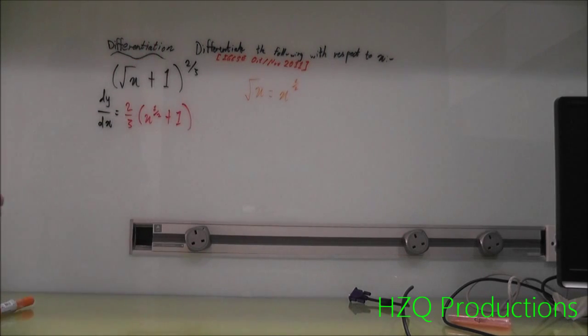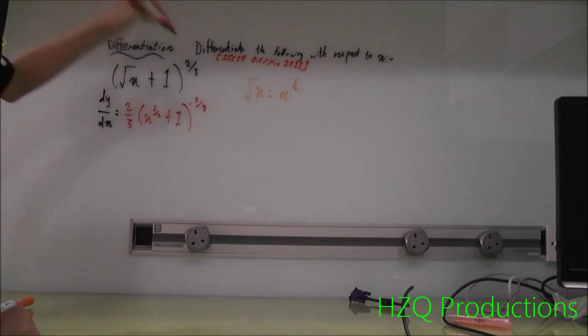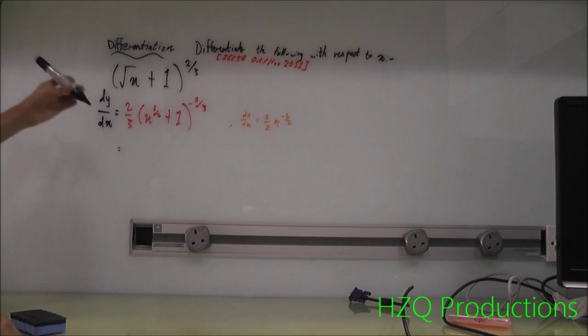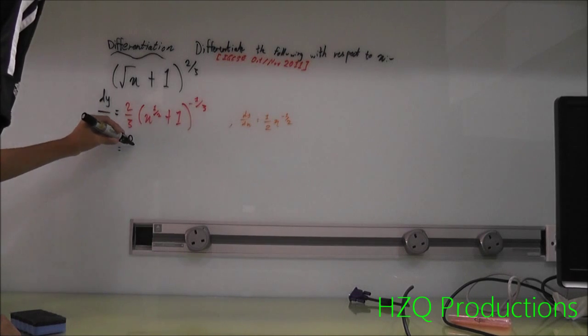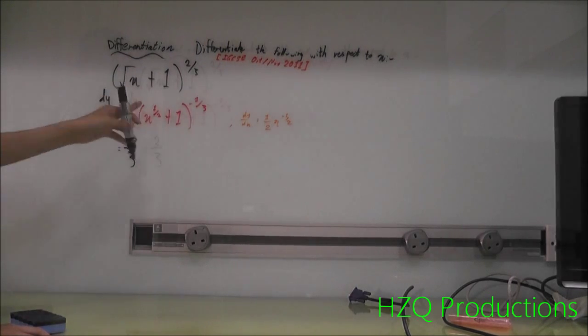Then, using your calculator, 2 over 3 minus 1 is what? Negative 1 over 3. And what happens next? This is something special. You have to differentiate this one more time. So, using this, now we have extracted. So, in conclusion, it's 2 over 3.